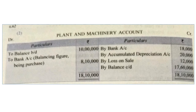The balancing figure rupees 8,10,000 denotes purchase activity. In this account, 'by bank account' represents inflow of cash — this amount will be added in investing activities. The 'to bank account' purchase will be subtracted in investing activities. Loss on sale of rupees 12,000 will be returned to cash flows from operating activities and will be added.